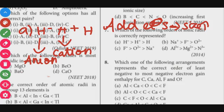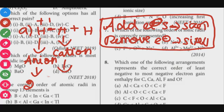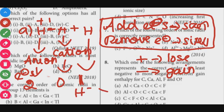Question number 7 is about ionic size. When you add electrons, size increases; when you remove electrons, size decreases. H minus has 2 electrons (hydrogen gains one extra), neutral H has 1 electron, and H plus has 0 electrons. So the correct size order is: H minus > H > H plus. The given option showing H plus and H in wrong order is incorrect.